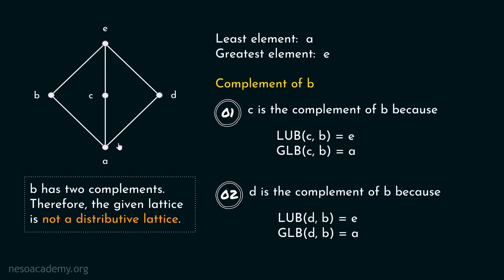It is always easy to find the complement rather than going through the whole procedure of checking both distributive properties. You can easily find that the least upper bound of B and C is E and the greatest lower bound of B and C is A, and similarly for B and D. Since B has two complements, this lattice is not a distributive lattice.